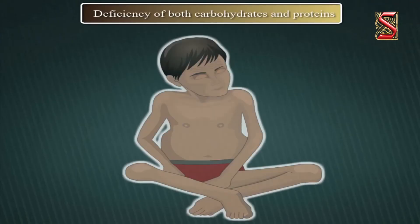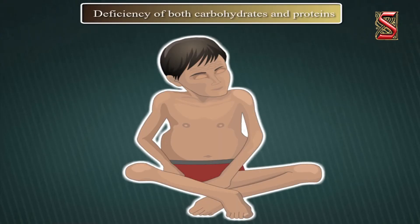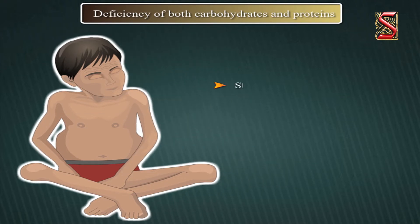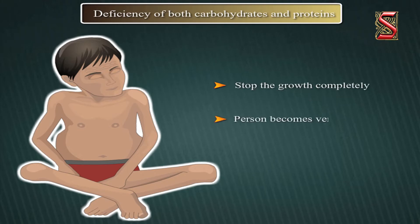Deficiency of both carbohydrates and proteins may stop growth completely. Such a person becomes very lean and thin and grows so weak that he or she may not even be able to move.